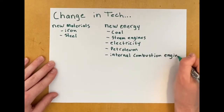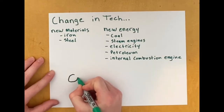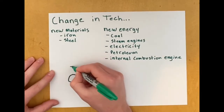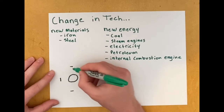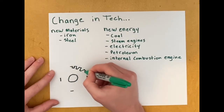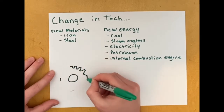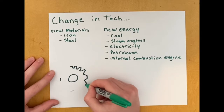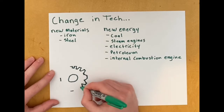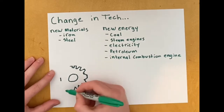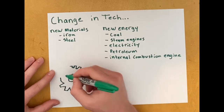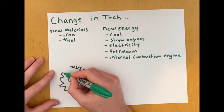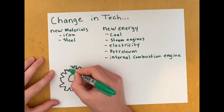This energy would then be used to power many of our machines that we were using to make products. With electricity, the same was applied. Other changes in technology included inventions of new machines, which helped us get things done more efficiently and produce much more product in smaller amounts of time than the way things used to be done before.